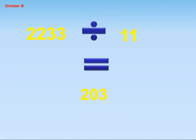Two thousand two hundred and thirty-three divided by eleven equals two hundred and three. Two thousand seven hundred and eighty-one divided by nine equals three hundred and nine.